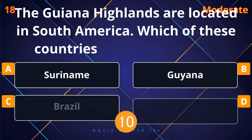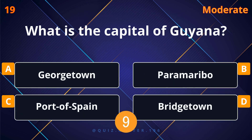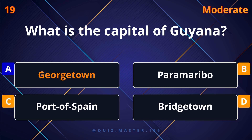The Guiana Highlands are located in South America — which of these countries does it not cover? Argentina. What is the capital of Guyana? Georgetown.